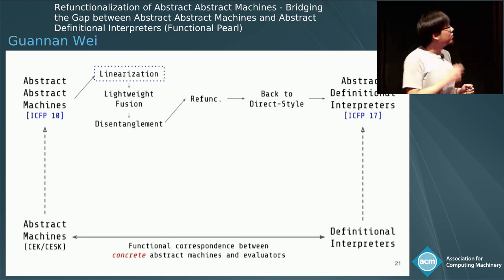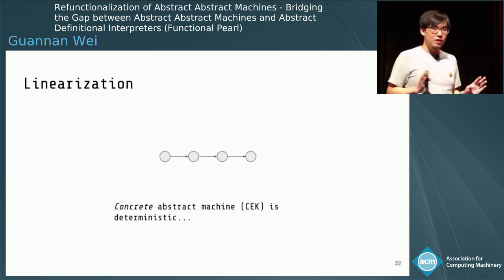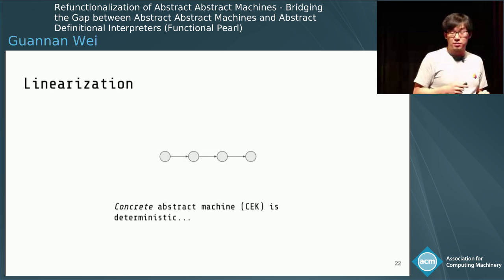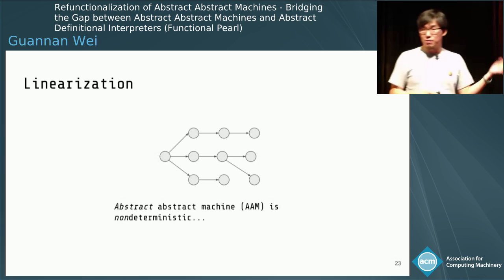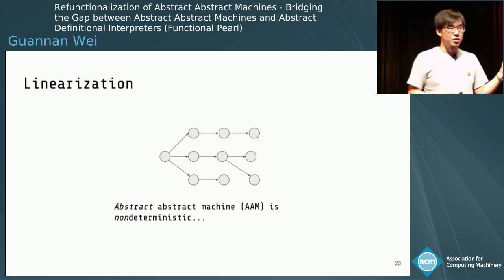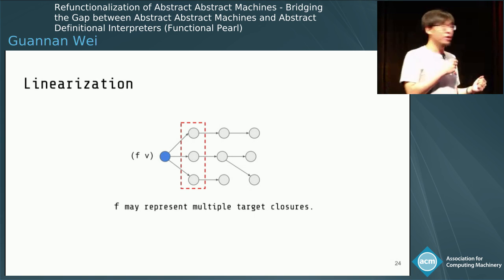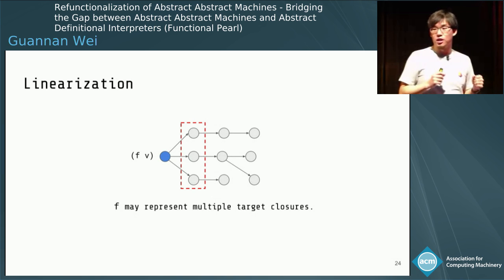I'll start from the first transformation, called linearization. In a concrete abstract machine like the CEK machine, the state transition is deterministic — there is a unique successor state. But in the abstracting abstract machine, the transition becomes non-deterministic: you may have multiple successor states. For example, given a function application F applied to V, if F is a variable, it may point to multiple target closures and we need to explore all of them.